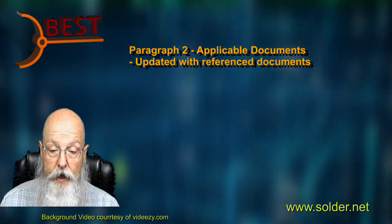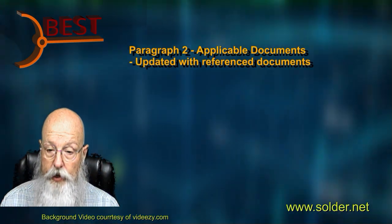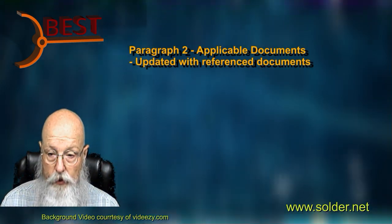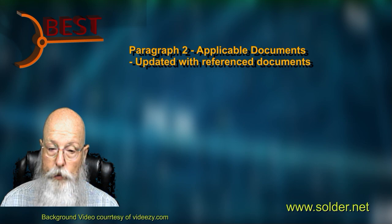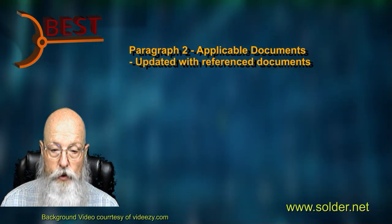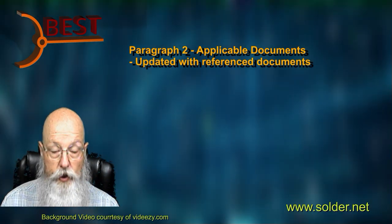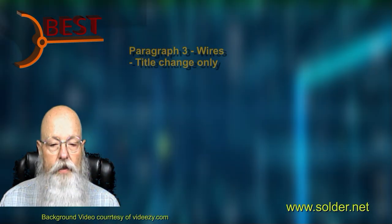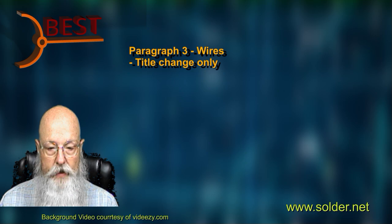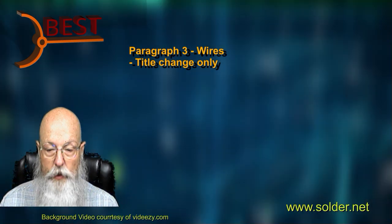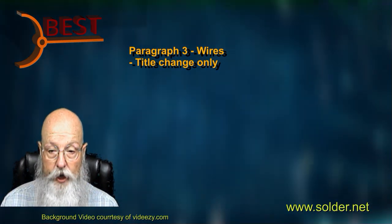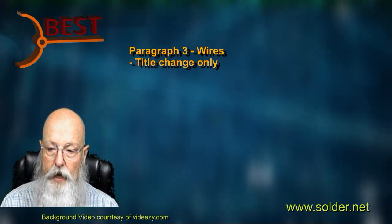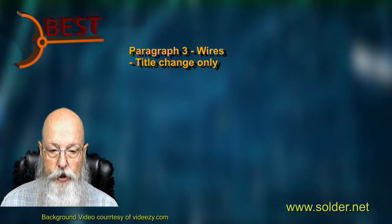As noted in the introduction of this video, paragraph 2 was updated to list all document titles for referenced materials within the 620E. Section 3 has had the previously mentioned title change, but the criteria remains the same as in Revision D.